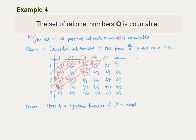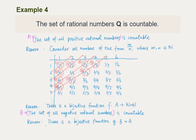We can also argue that the set of positive rational numbers is countable because there is a bijective function mapping this set to N×N. Next, we consider the set of all negative rational numbers. This set is also countable because there is a bijective function mapping the set of positive rational numbers to the set of negative rational numbers. Finally, the set of rational numbers Q is countable because it is a union of the set A, set B, and the set containing only the element 0.